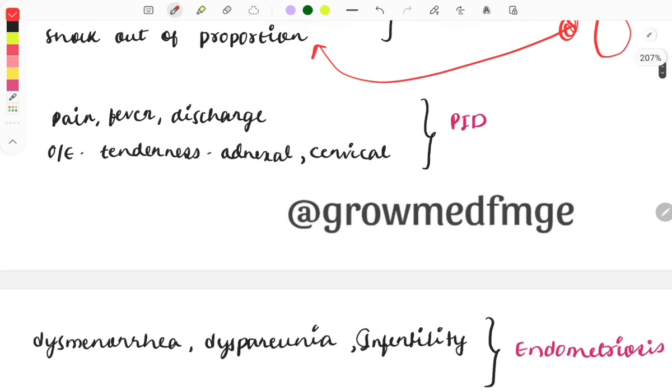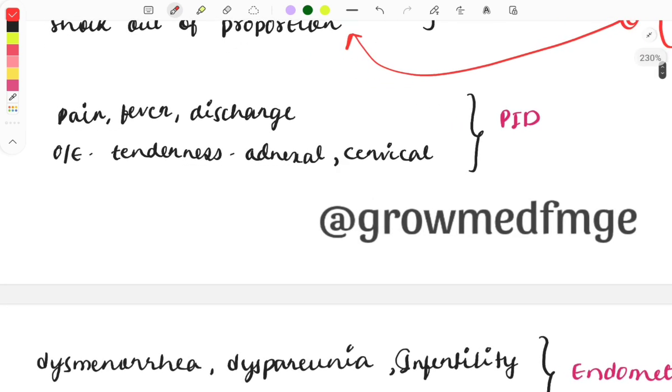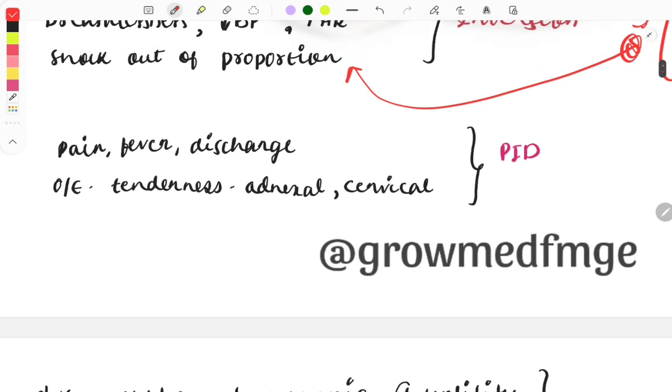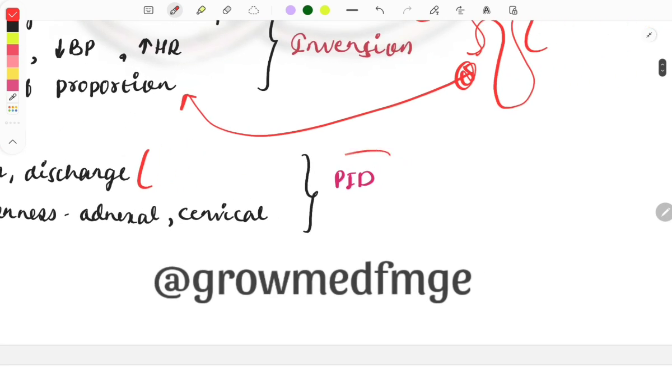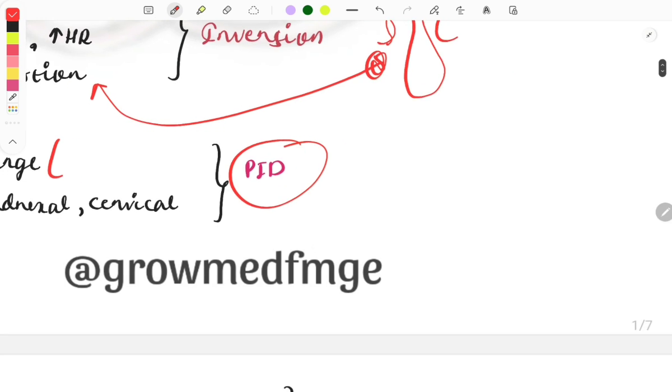Pain, fever, discharge, and on examination you can see cervical tenderness, adnexal tenderness, and uterine tenderness. These three types of tenderness along with pain and fever, or they can describe some discharge from the vagina, and that will be the case of PID (pelvic inflammatory disease).